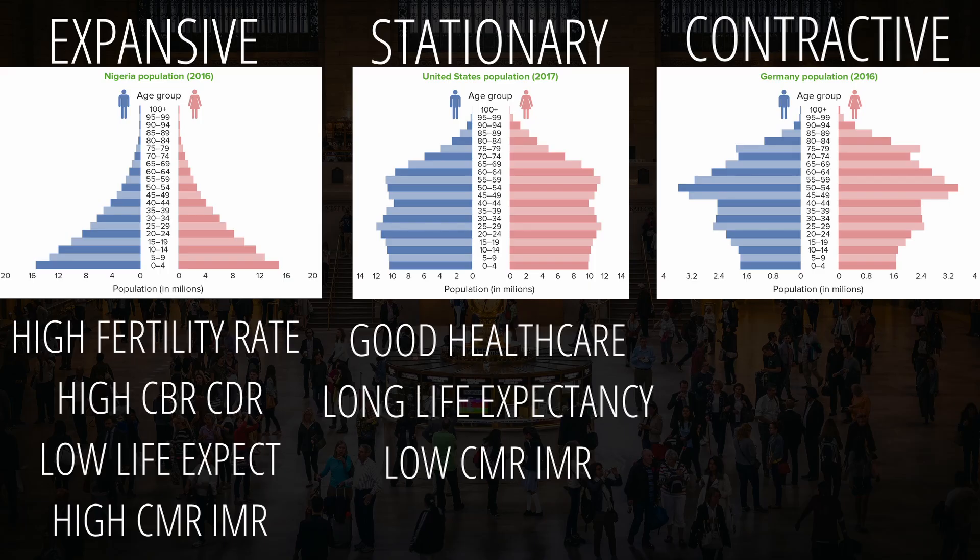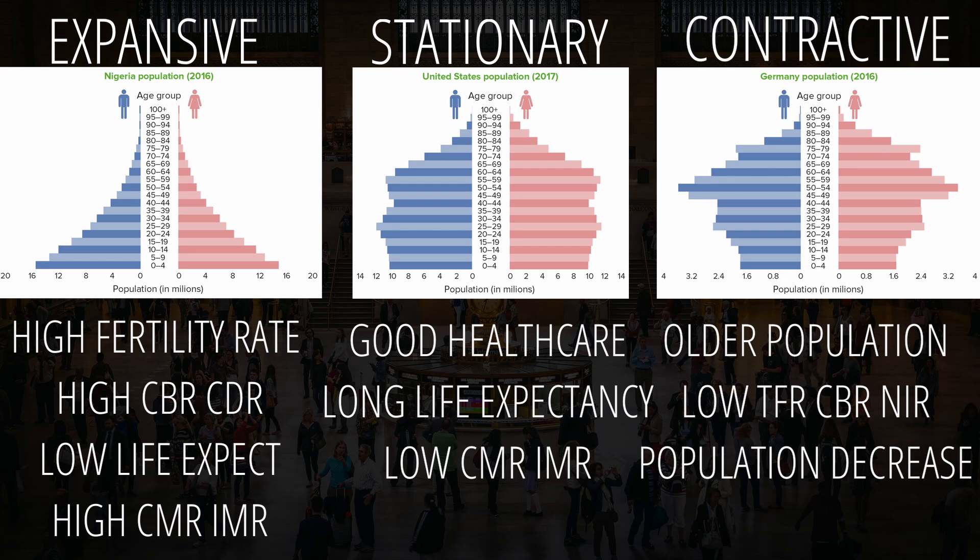Lastly, there's the constrictive population pyramid, which looks like a ghost. It is a top-heavy population pyramid with a significant number of older people up top, but not as many people being born. These population pyramids have low TFR, CBR, and NIRs because people are refusing to have babies for several reasons — expensive rent, high cost of living, and people pursuing their careers instead of having babies.